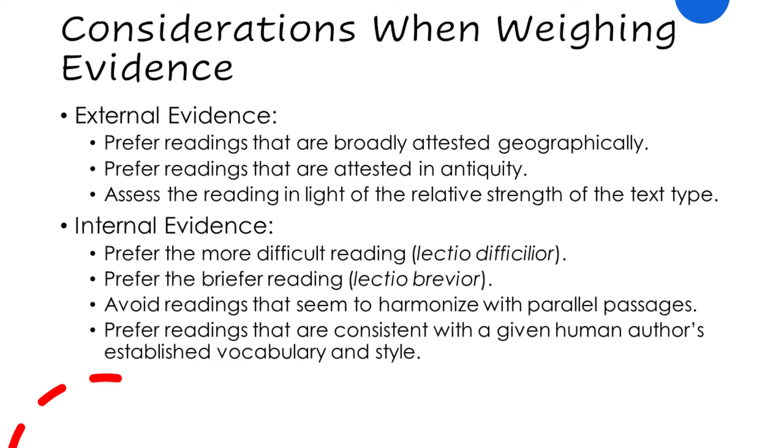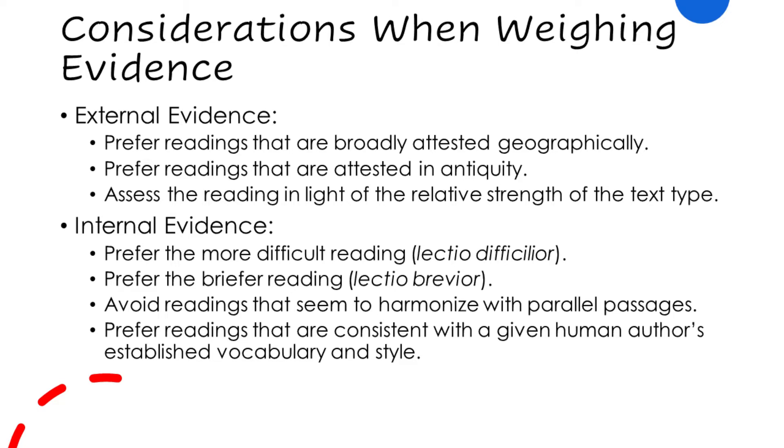Scholars distinguish between external evidence and internal evidence. External evidence looks at different manuscripts — things outside the manuscript being studied. First, we prefer readings that are broadly attested geographically: if the same reading could be found at the same time in Rome, Alexandria, and Antioch, it's likely genuine — it's unlikely three different places made the same mistake. We also prefer readings attested in antiquity; the older the manuscript, the more weight we give it.